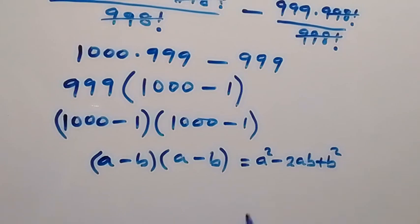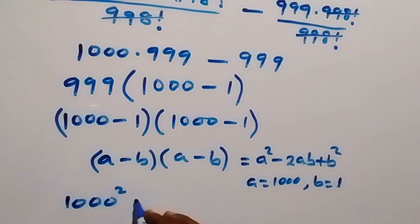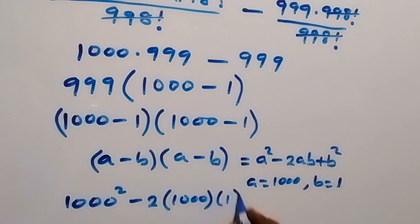So where a here is 1000, then b is 1. So when we apply this a now, this will give us 1000 squared, then minus 2 times 1000 times 1, then plus 1 squared.